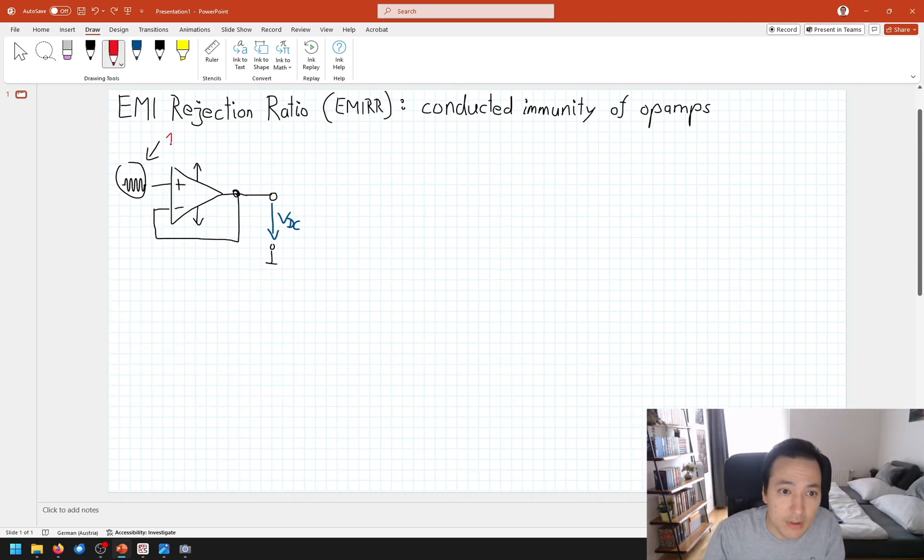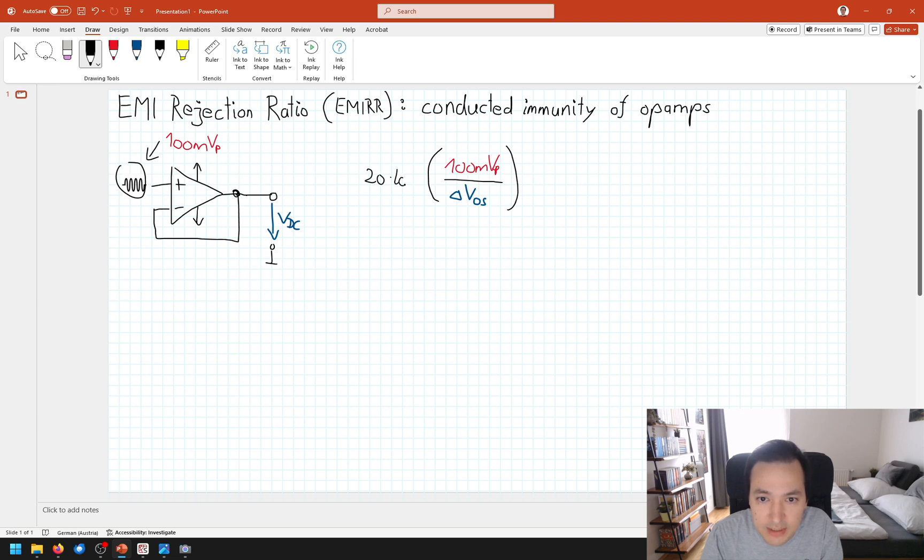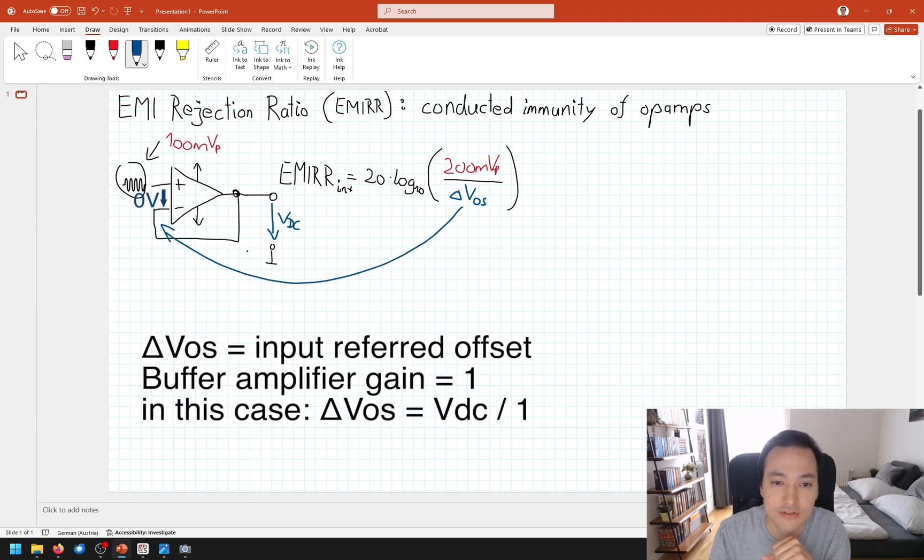Let's say we apply an RF signal that's 100 millivolt peak. We can now divide those 100 millivolt by the DC offset at the output, and then we put this into a logarithmic scale. We call this the EMI rejection ratio of our plus input. It's important to note that delta V offset is the input referred offset voltage. But here we have a buffer structure with an amplification of 1, which means that it's equal to VDC here at output.